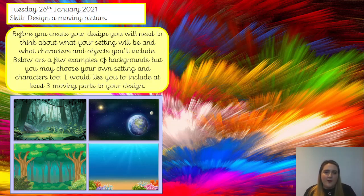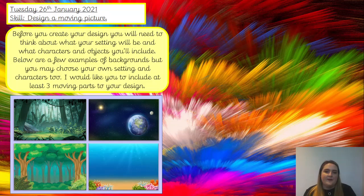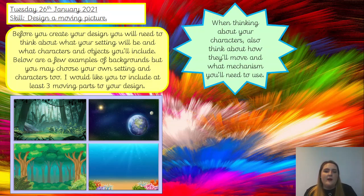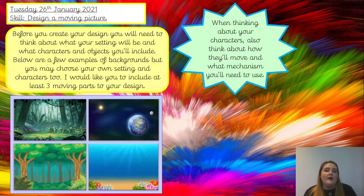I just want you to pause the video and you might jot down some ideas — just doing like a little mind map — just jot down some ideas of what your setting and your characters will be. Hopefully you've chosen one that you're going to go with: one setting and one group of characters that relate to that setting. Then I want you to think, once you've got your characters and your objects, how will they move? So if you've got a rabbit, it makes sense that the slider goes up and down because it jumps. Think about how your characters would move and then what mechanism you will need to use.